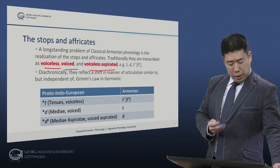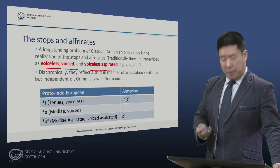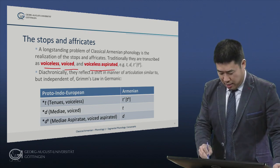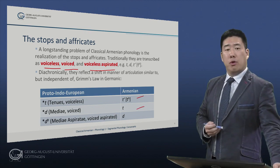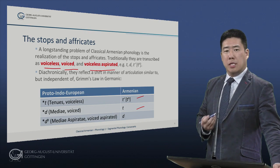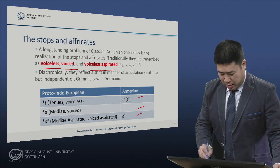Proto-Indo-European D became Armenian T, and finally Proto-Indo-European D-aspirated became Armenian D.